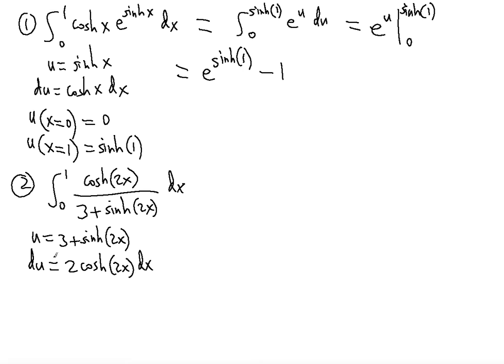Also we're going to change the limits of integration. u as a function of x when x equals 0, u is equal to 3 plus sinh 2 times 0. Sinh of 0 is 0, so 3 plus 0 is just 3.